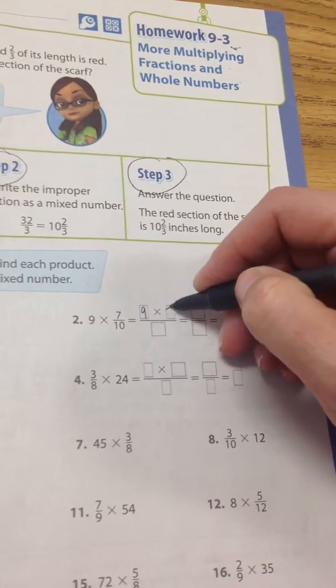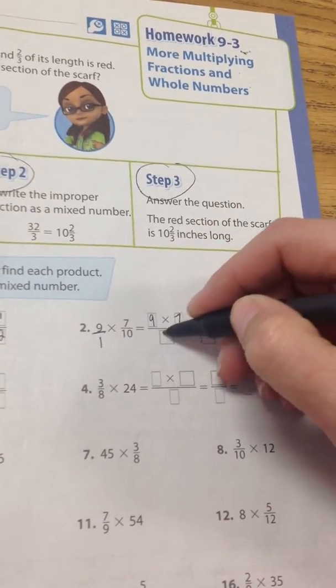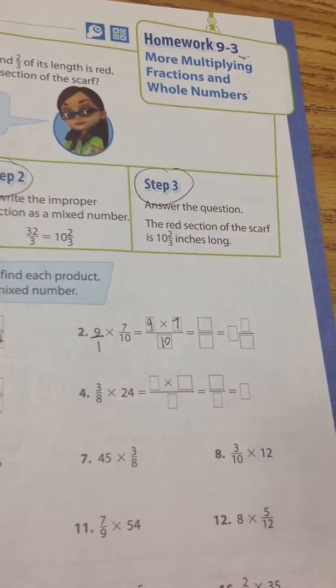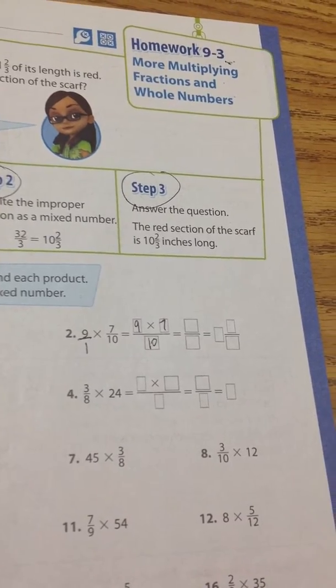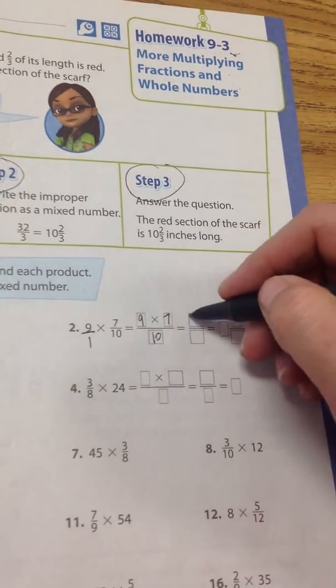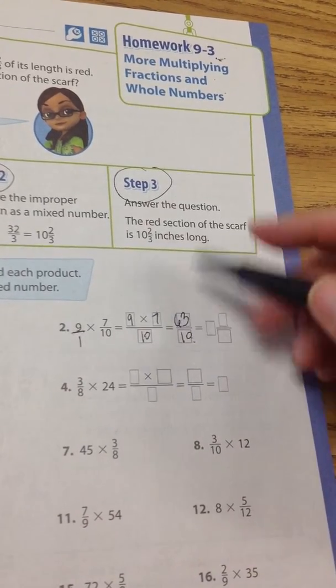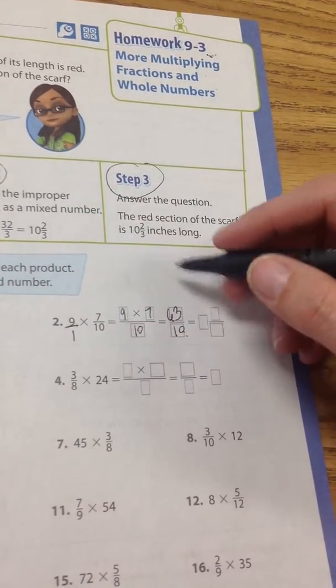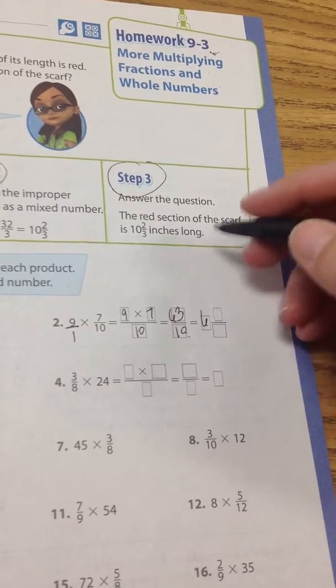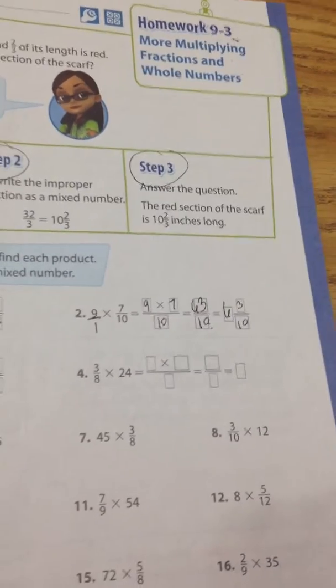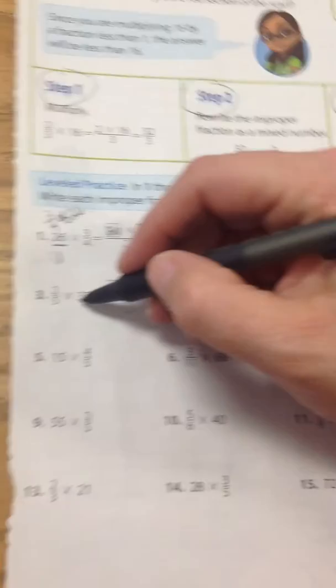9 times 7, put the whole number over 1, all over 10. 9 times 7 is 63 over 10. I really don't know how I can do this mentally. 10 goes into 60, 63, 6 times with 3 left over. All right, let's go to the next one.